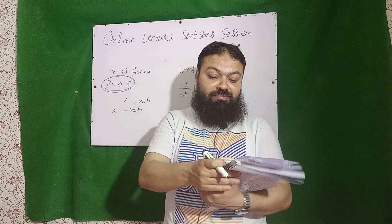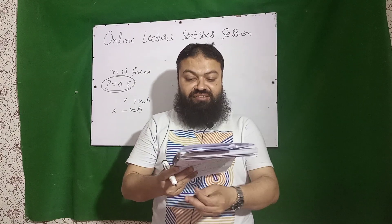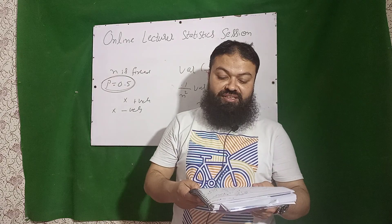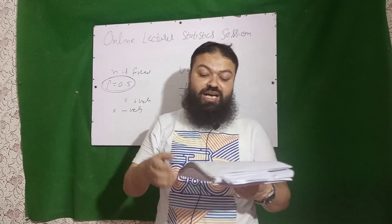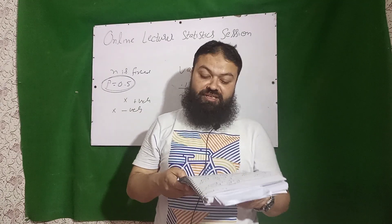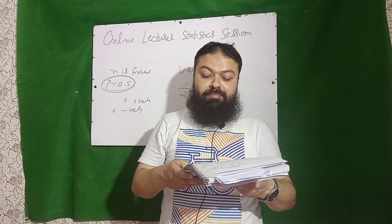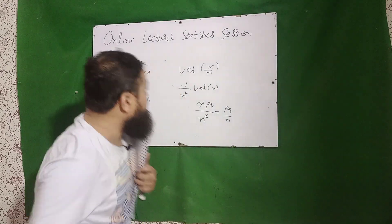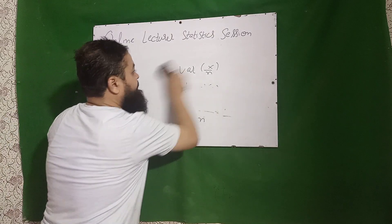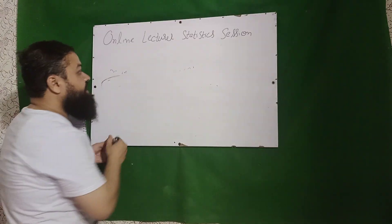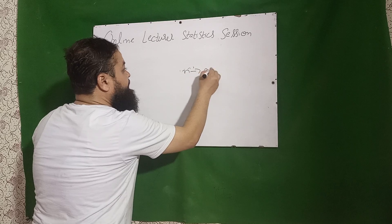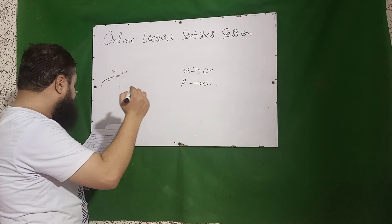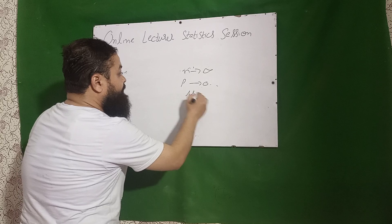Next question: the necessary and sufficient condition for hypergeometric is sampling without replacement. Next question: a binomial distribution may be approximated by Poisson when n approaches infinity, P approaches 0 (becomes very small), and mu is constant.